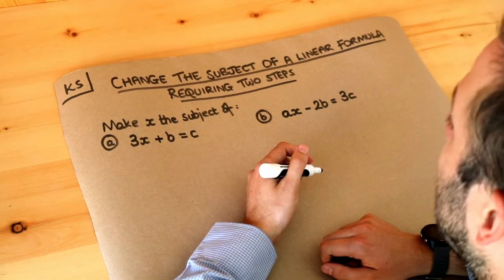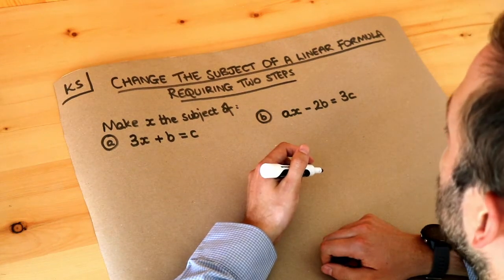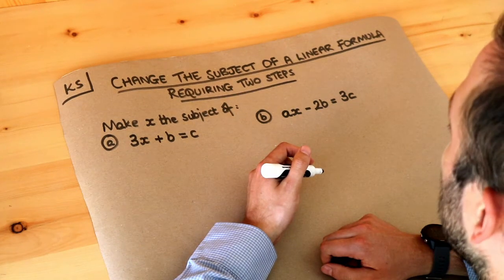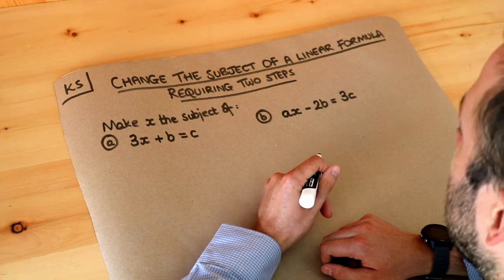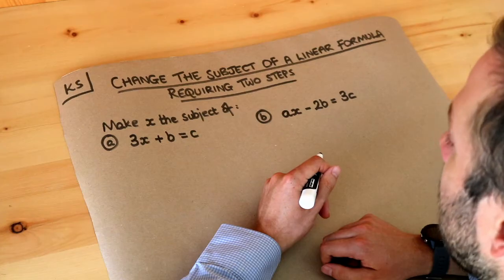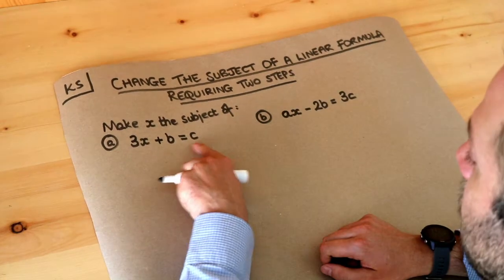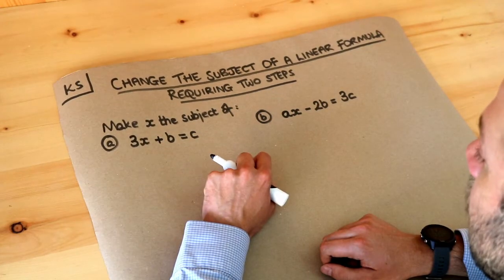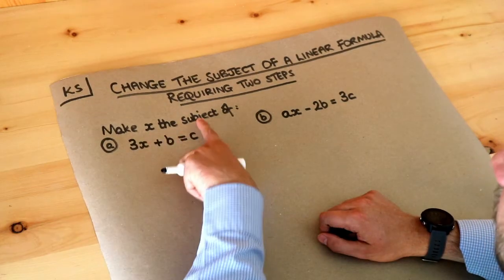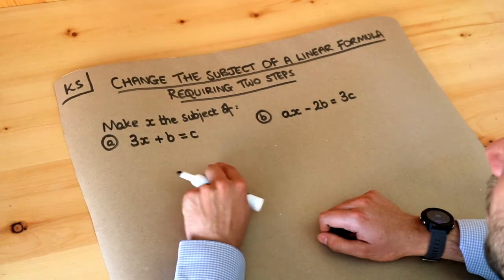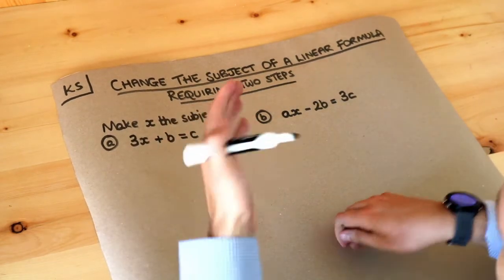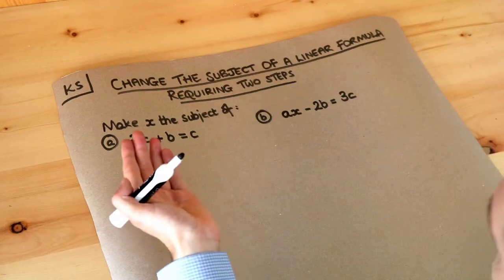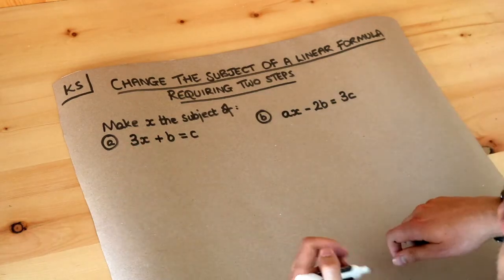Hello and welcome to this Dr Ross Mass key skill video on changing the subject of a linear formula requiring two steps. In a previous video we saw that changing the subject of the formula means to get a particular variable in your equation on its own. So if you want to make x the subject of this equation it means we want to make the x on its own. Remember with equations it's a kind of balancing act, so whatever we do to one side of the equation we do the same to the other side.